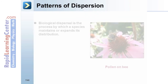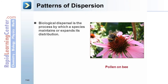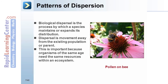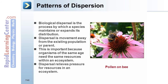Biological dispersal is the process by which a species maintains or expands its distribution. Dispersal is movement away from the existing population or parent. This is important because organisms of the same age need the same resources within a given ecosystem, and dispersal relieves pressure for resources. For example, a bee with pollen on its back will facilitate the dispersal of pollen grains.